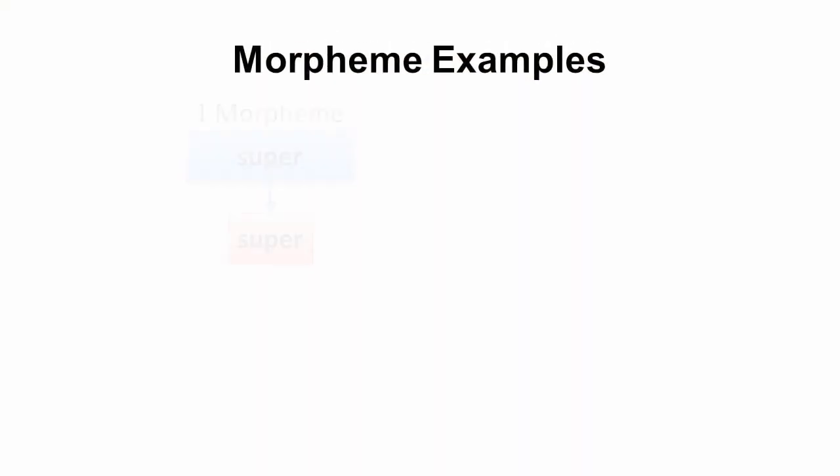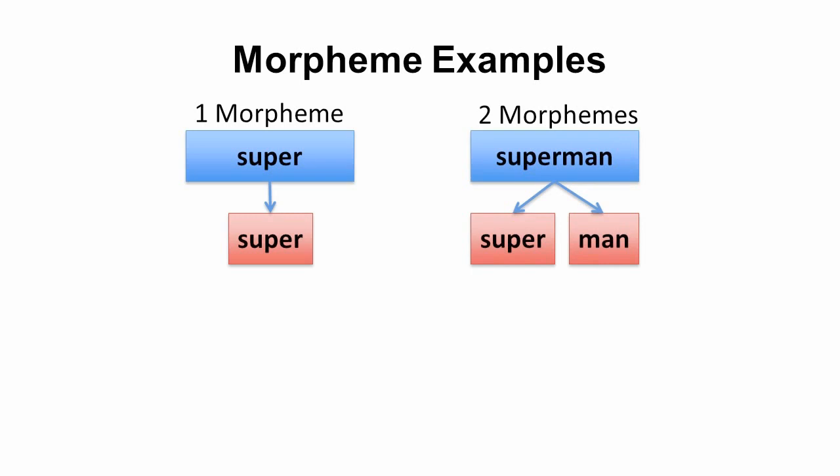Morphemes are the smallest grammatically meaningful units of a language. There are many different kinds of morphemes — nouns, verbs, whatever. The whole idea is you can't reduce them down any further. If you try to break a morpheme down into its subparts, it will lose all meaning. That's how you can identify what is or is not a morpheme. For example, the word 'super' is a single morpheme — you can't break that down. But the word 'superman' is two morphemes: you can break it down into 'super' and 'man'.